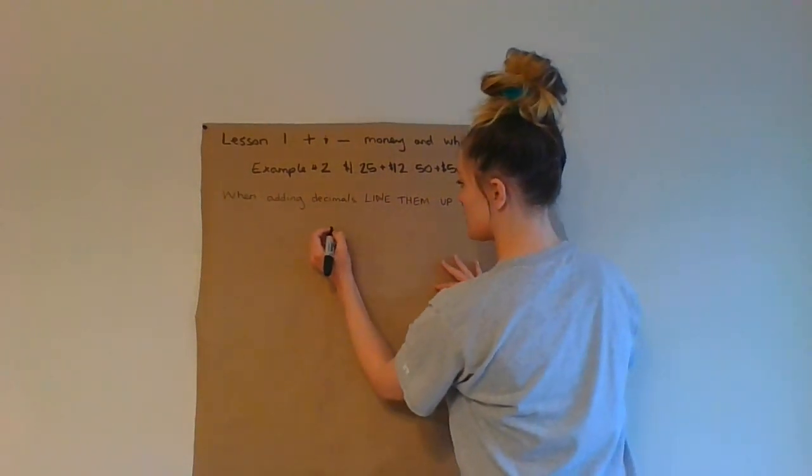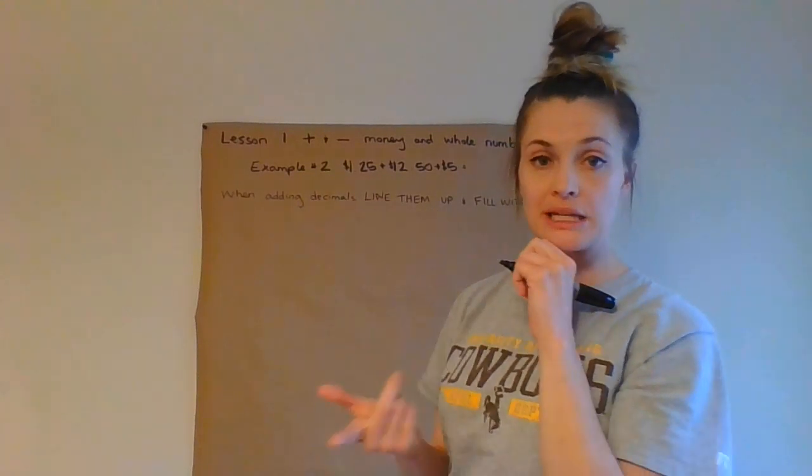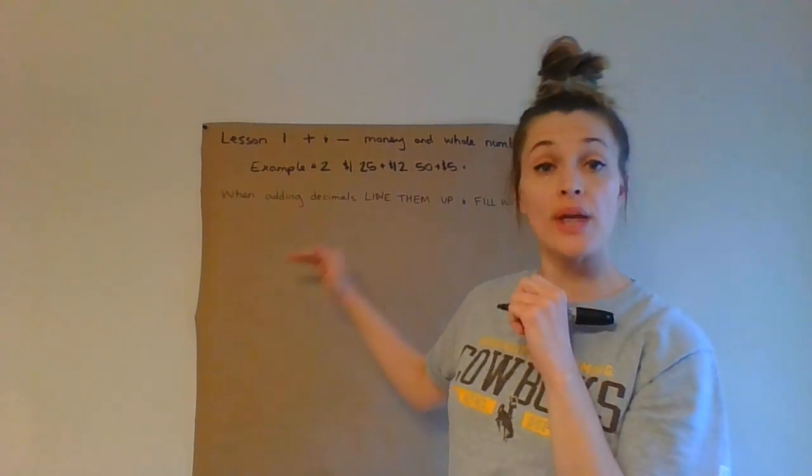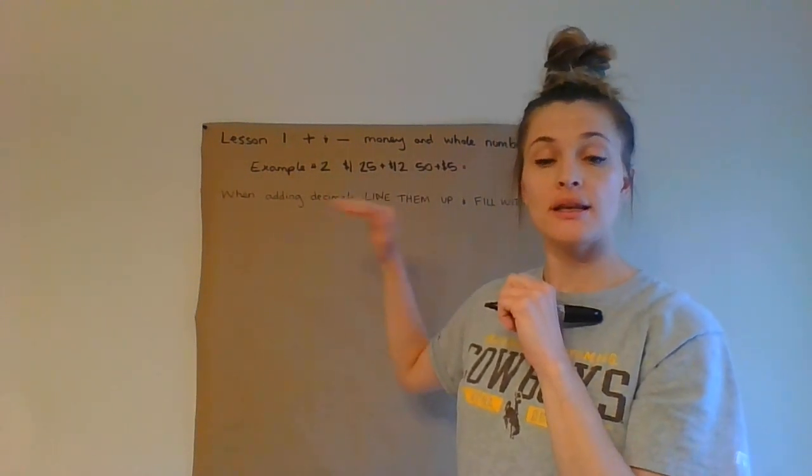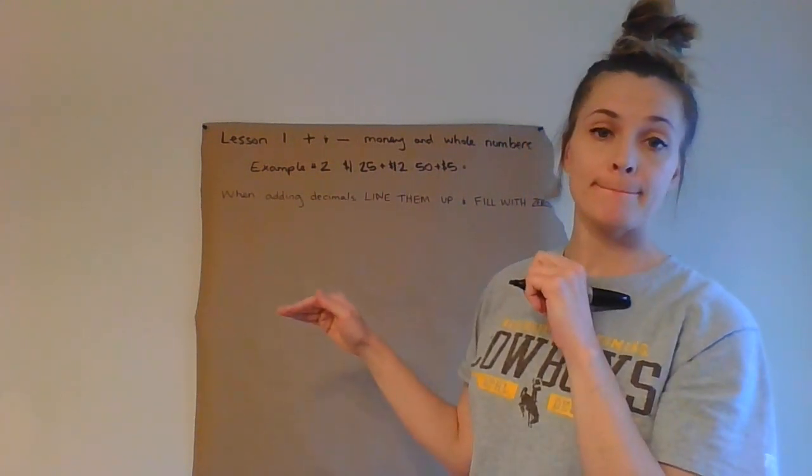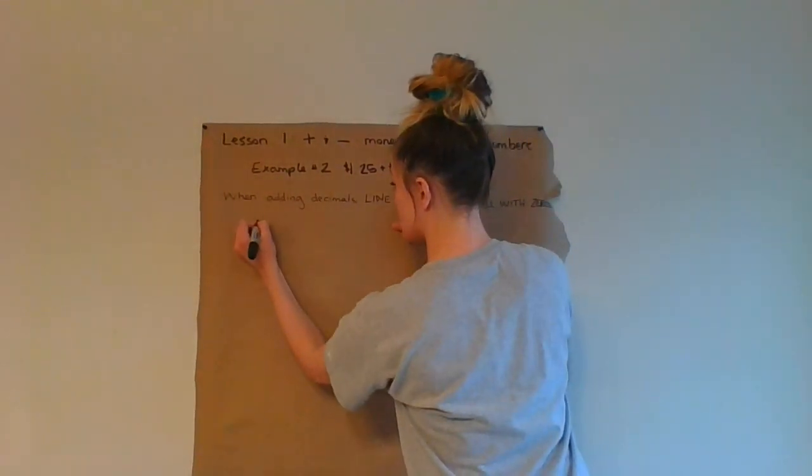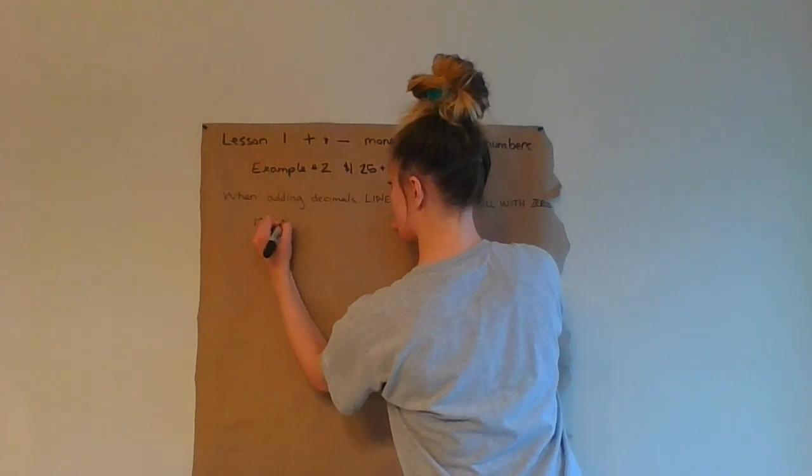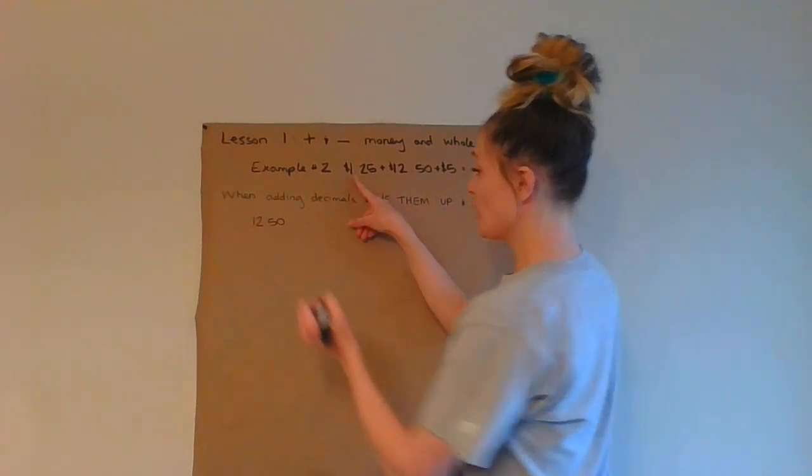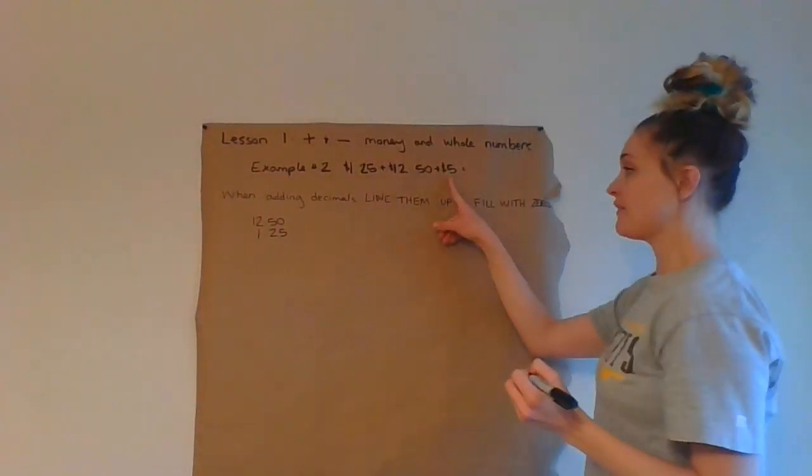Now, commutative property, you can change things around and it doesn't matter the order, right? So if I put $12.50 at the top, it's okay because addition is commutative. You can commute them, you can move them in different orders and you get the same answer. So I'm going to put $12.50 at the top. Then I'm going to add $1.25. Then I'm going to add $5.